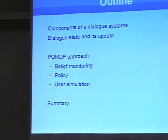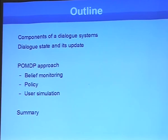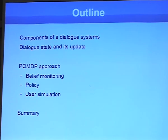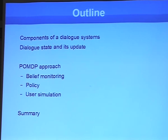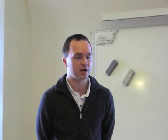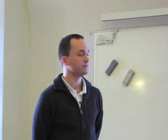The outline of the presentation: first, I will mention the main components of dialogue systems. Then I will talk about dialogue states and dialogue acts. After that, I will introduce POMDP — partially observable Markov decision processes — which we use for modeling statistical dialogue systems. Within this approach, I will discuss belief monitoring, policy, and user simulation, which helps us train statistical dialogue systems. Finally, I will provide a summary.